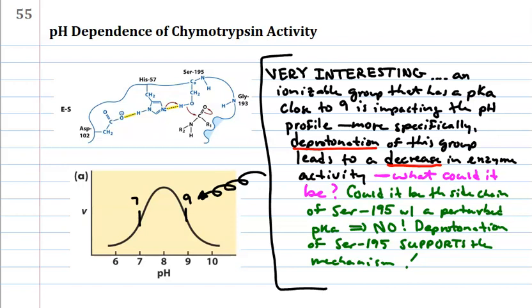So page 55, just kind of reviews of what we talked about. Okay. We've got something at nine. What could it be? In the past, people have told me, I bet serine 195 has a perturbed pKa. And I would say, you know what? That might be true. But deprotonation of serine 195 supports the mechanism. It does not work against the mechanism. So even if that was the case, it can't be serine 195.